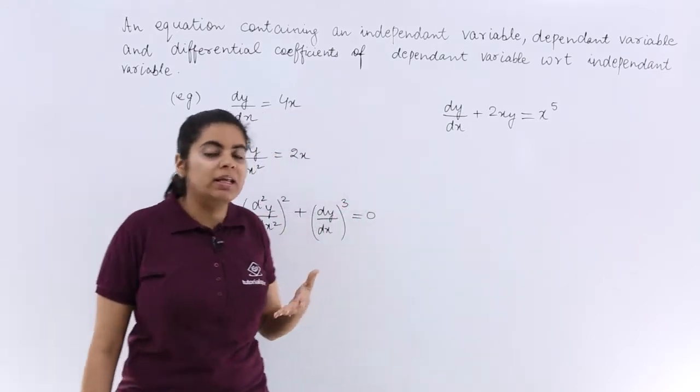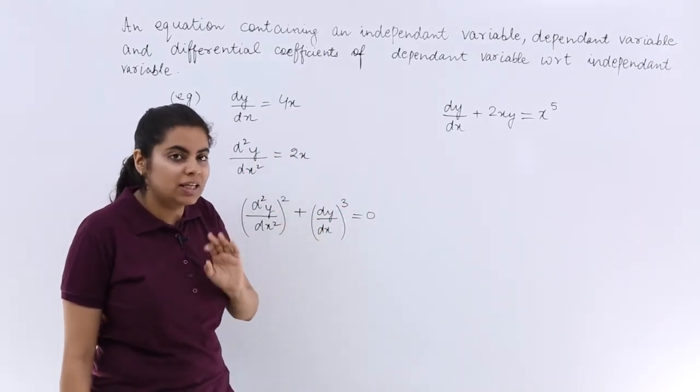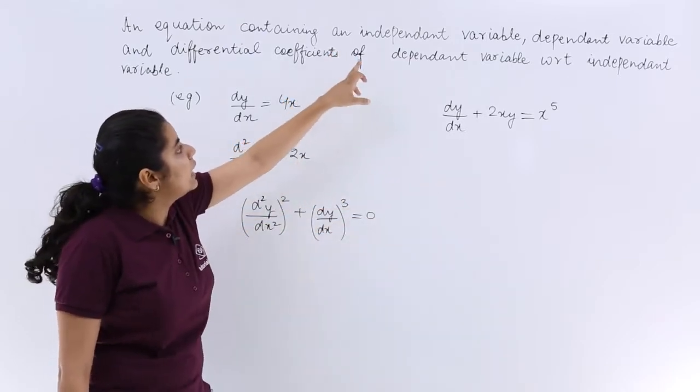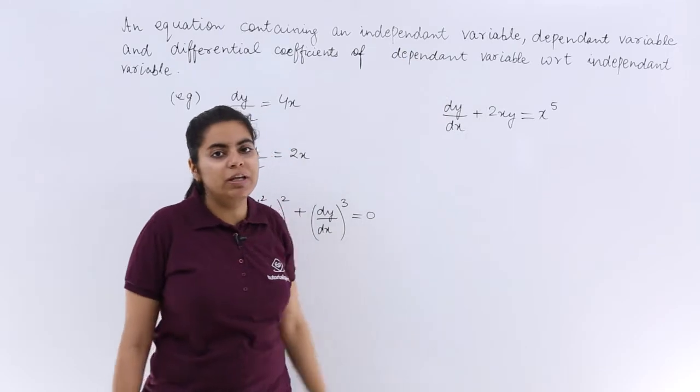Let me take this up one by one. An equation means there must be an equal to sign. In these examples you see there is always an equal to sign. It contains an independent variable.